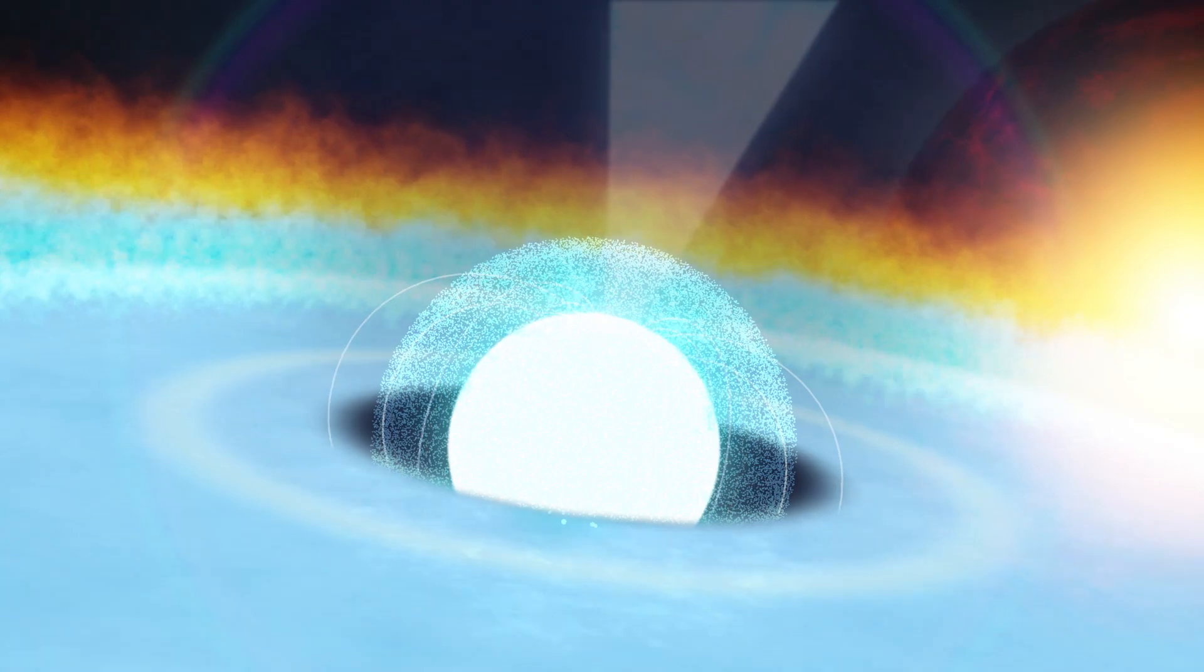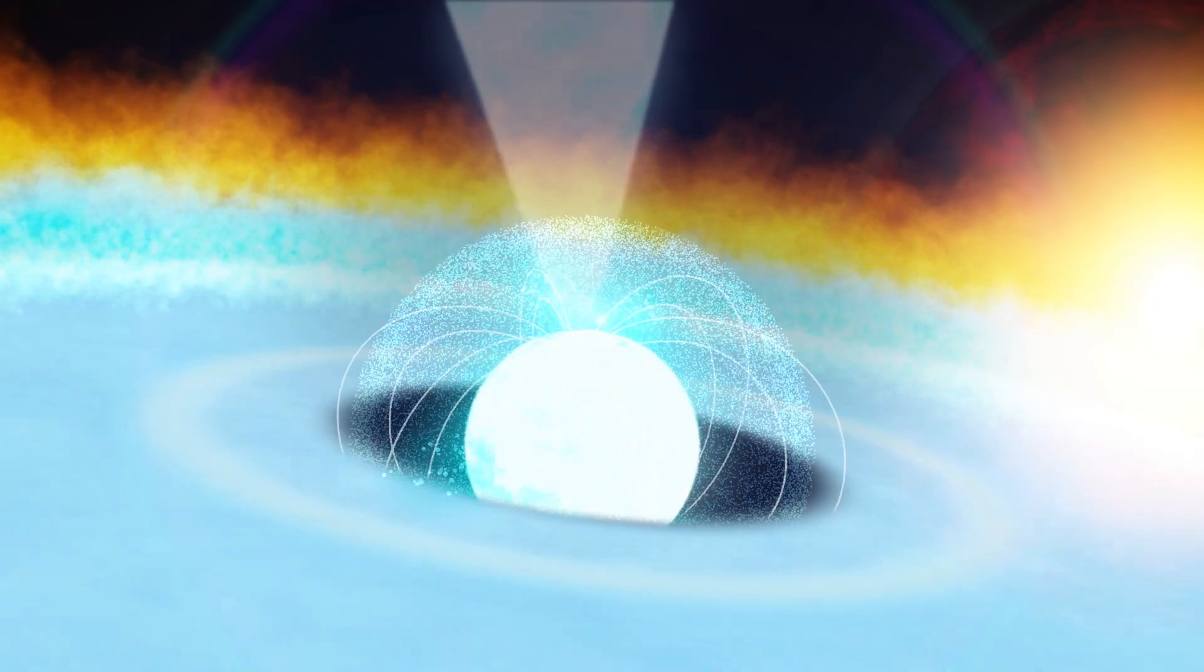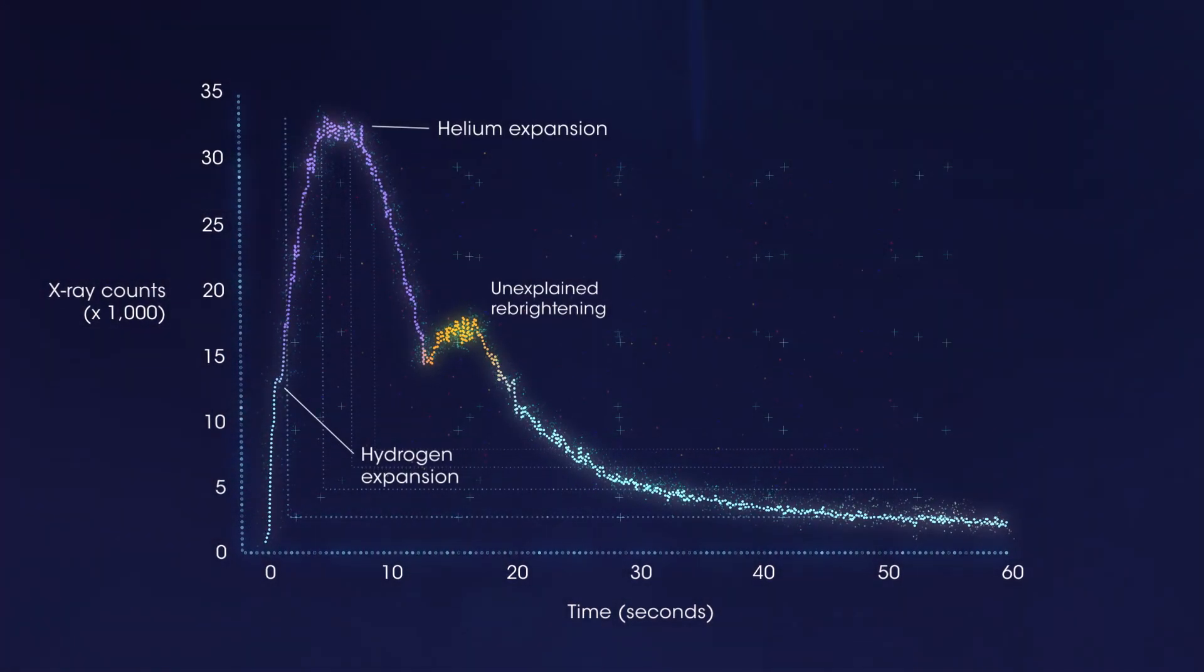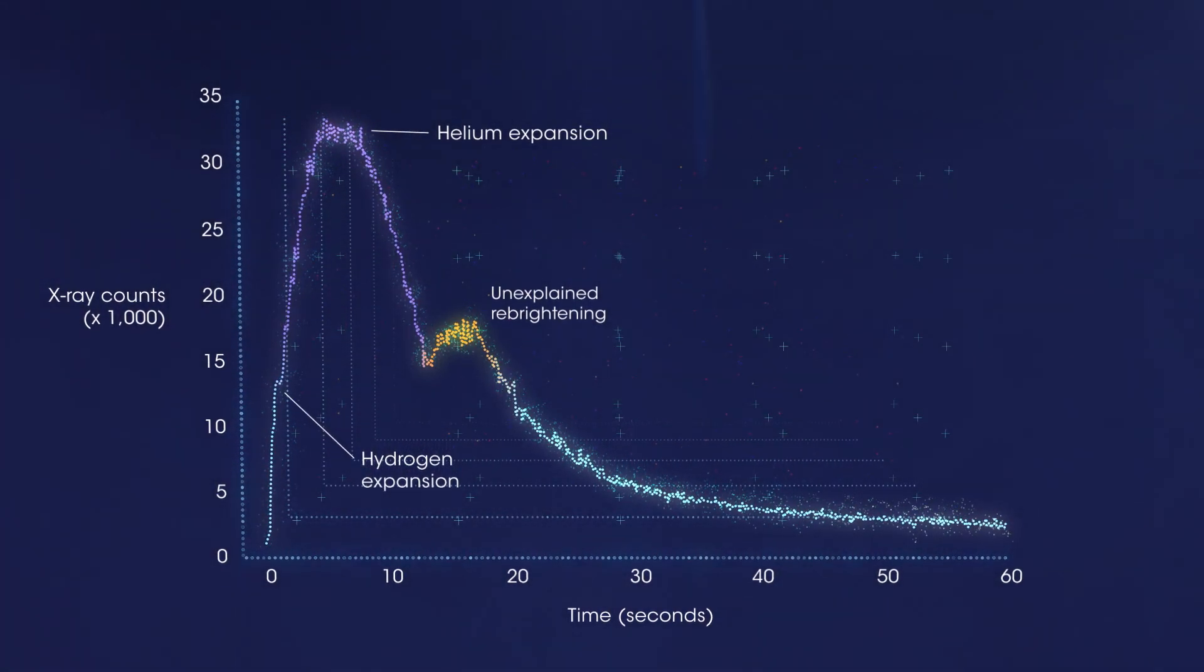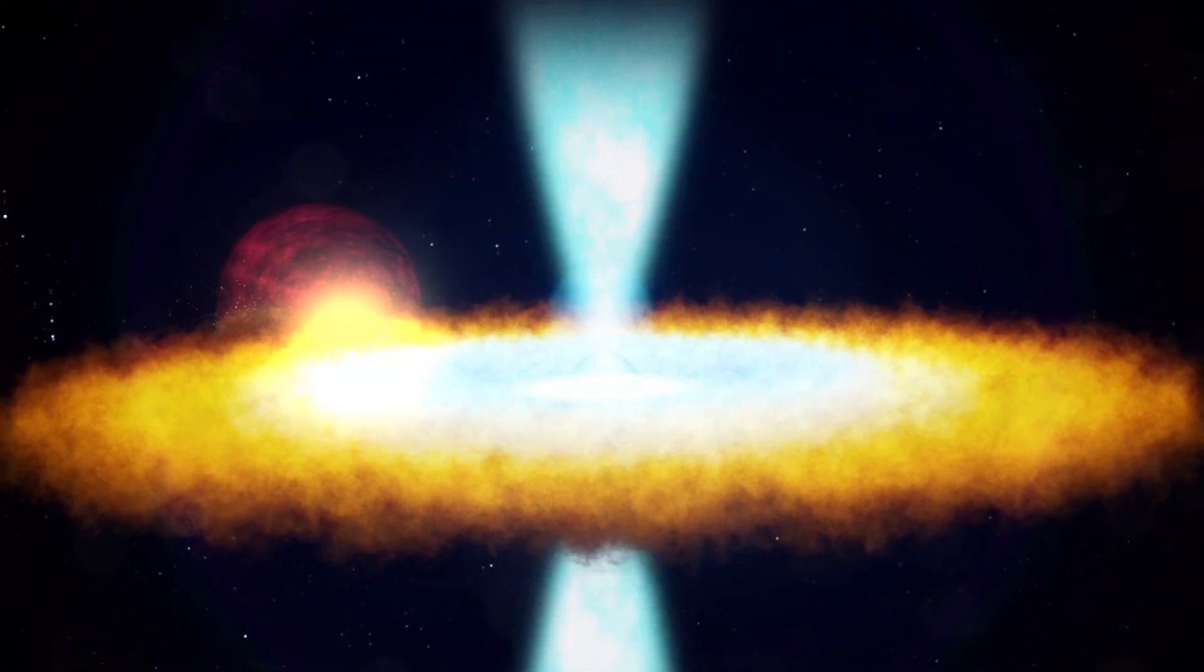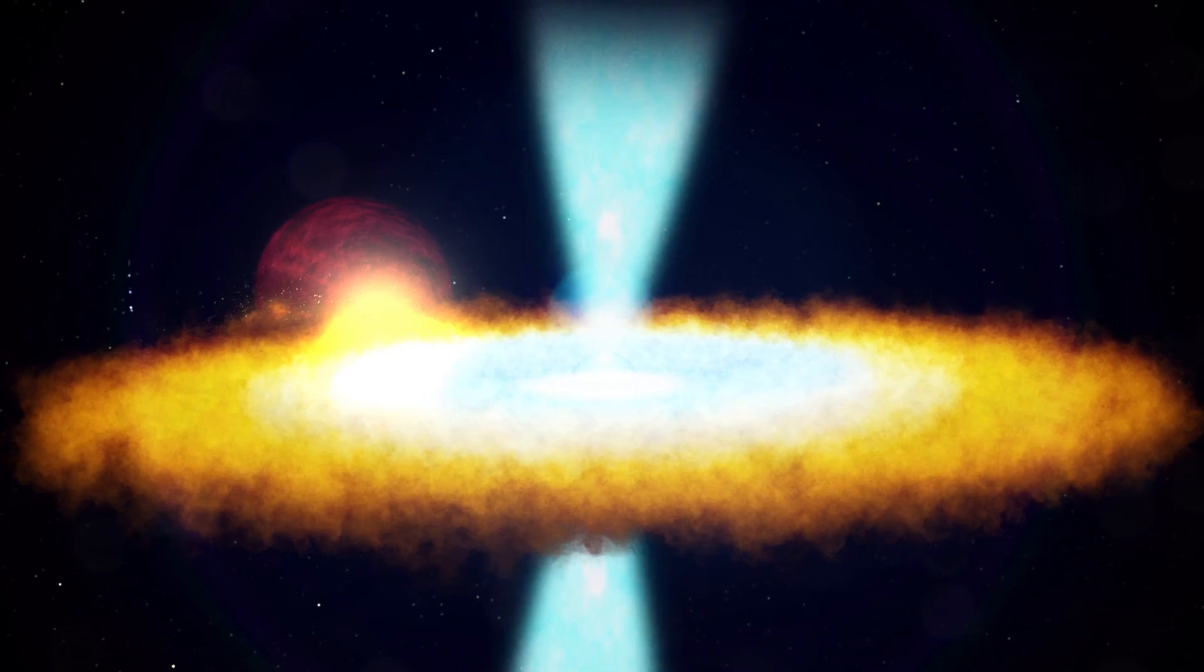The fireball then quickly cools, and the helium settles back onto the surface. It was all over in 20 seconds, but NICER data clearly show important details that haven't been seen together in other bursts. This will help scientists better understand the extreme physics of these eruptions on accreting neutron stars.